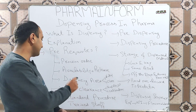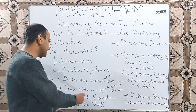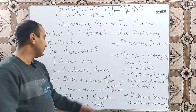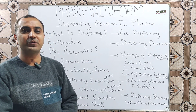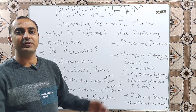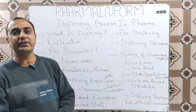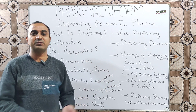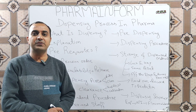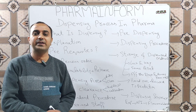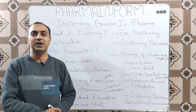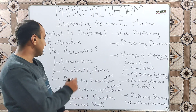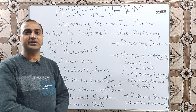What are the prerequisites for dispensing? For dispensing we must have: a process order, availability and release status of materials, a dispensing area, line clearance, a standard procedure, and trained staff. The process order is basically a document which includes the quantity of all the ingredients — including excipients and APIs — required for a specific batch. It also contains lot numbers of all the excipients and APIs, batch size, and batch number.